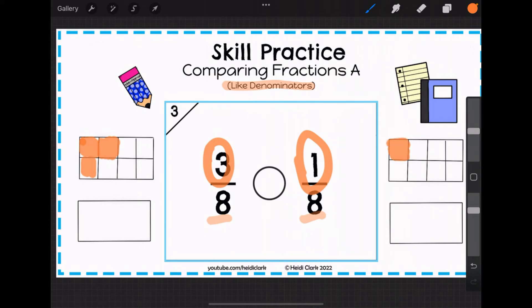So which fraction is bigger, three eighths or one eighth? Three eighths is the bigger fraction.